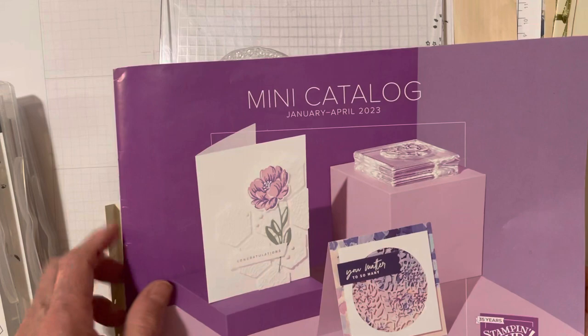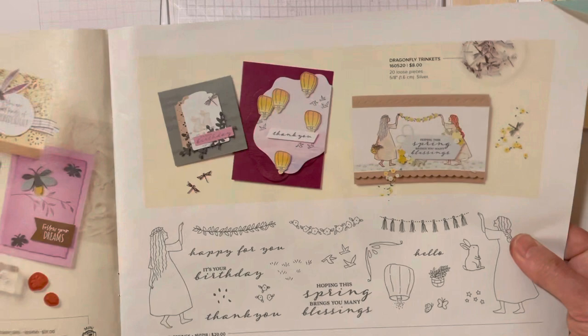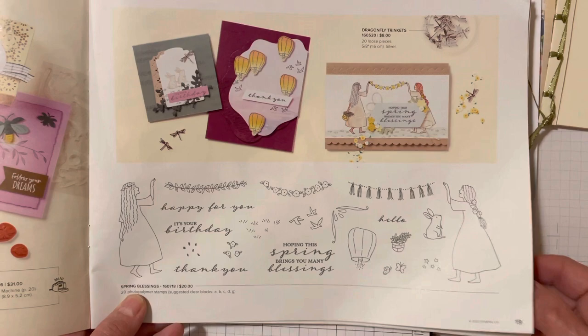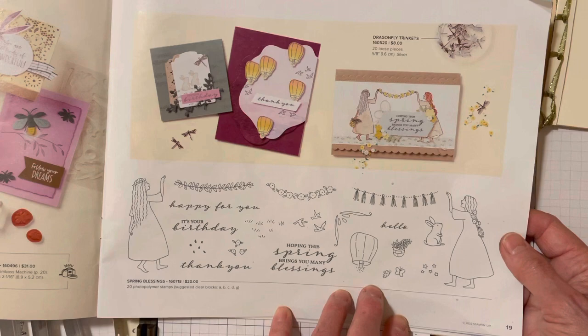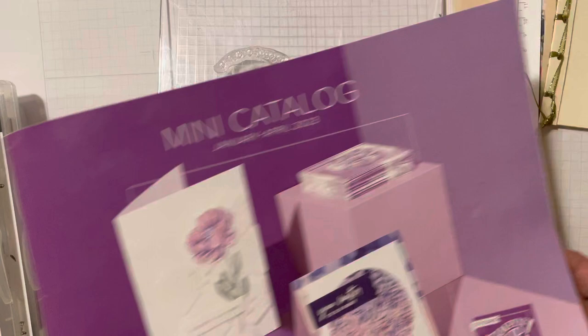The new mini catalog, January to April 2023, has just come out. And the first thing that caught my eye was the Spring Blessings on page 19. I just love the light, fun look of it. And what came to mind to me was to make a little book. My granddaughter absolutely loves stapling together pieces of paper and writing stories. So I thought, this is something I can make for her and send to her.